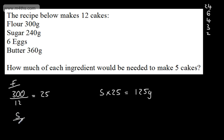If we look at the sugar, we've got 240 divided by 12, that's going to give me 20. So we need 20 grams of sugar per cake. So we're going to do 5 times by 20, and that's going to give us 100 grams. So that's the sugar.